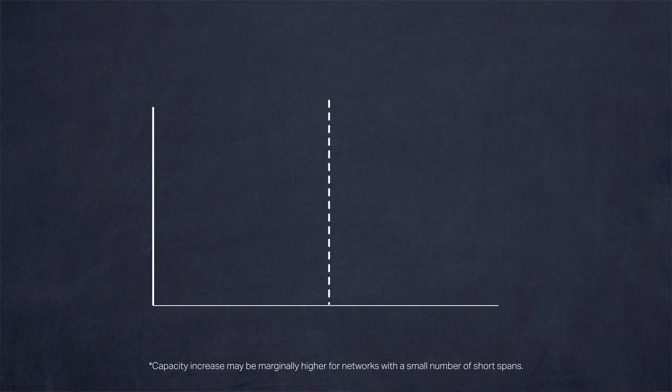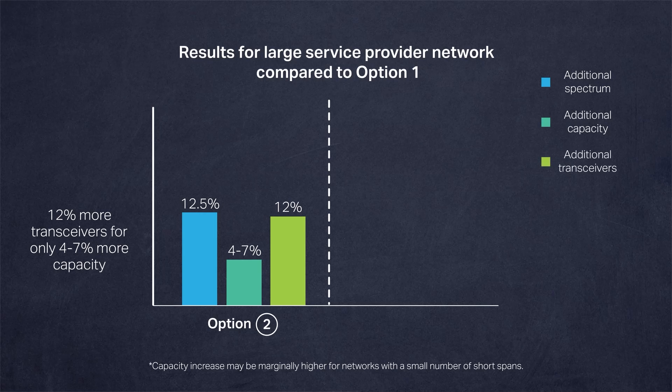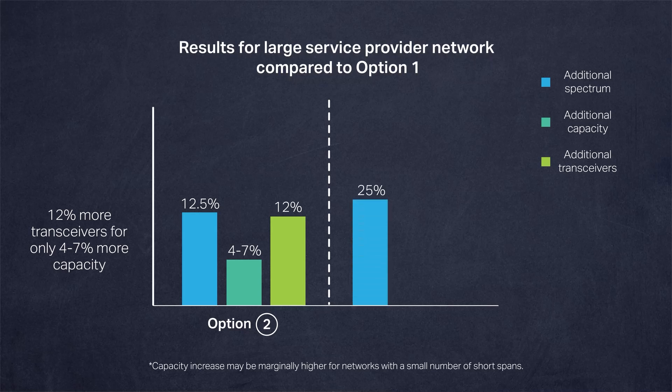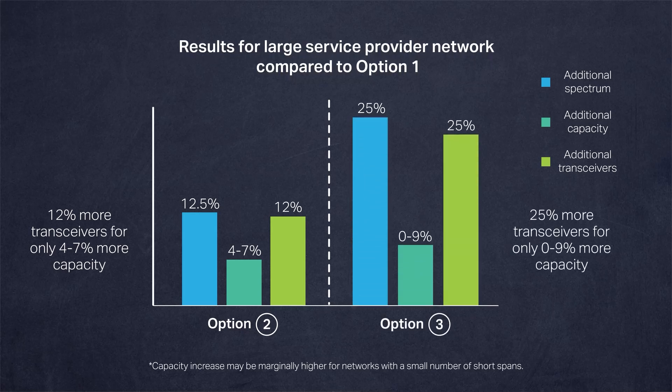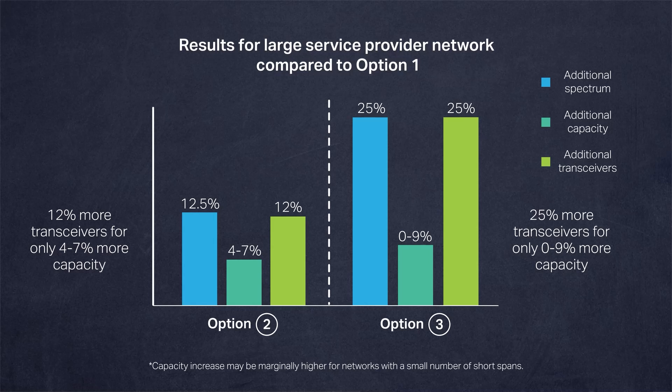Let's consider a sample Tier 1 service provider's backbone network. In this example, deploying the 10.8 terahertz or 12 terahertz C&L band yields diminishing returns on their investment. The 10.8 terahertz option uses 12% more coherent transceivers, thus increasing the cost per bit. Extending to the wider 12 terahertz C&L band is even more inefficient due to a much steeper increase in excited state absorption.